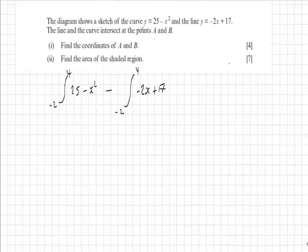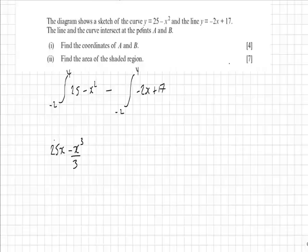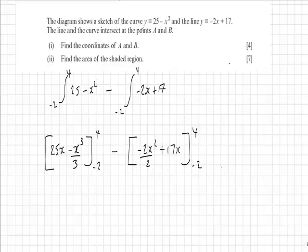So it's quite a significant question, awarded 7 marks. So integrating, we're going to get 25x minus x cubed over 3 between 4 and minus 2, subtract minus 2x squared over 2 plus 17x between 4 and minus 2.